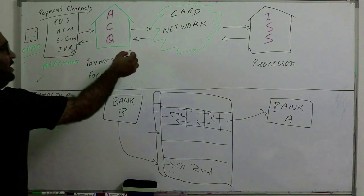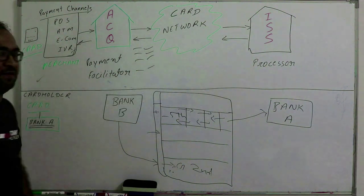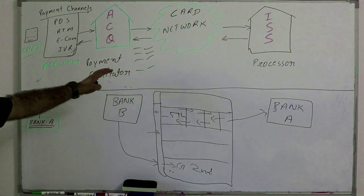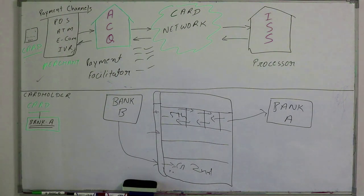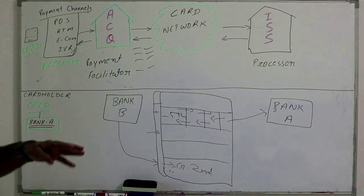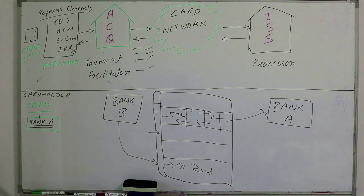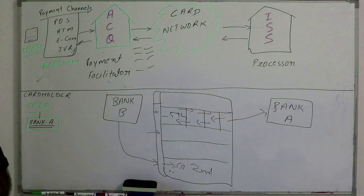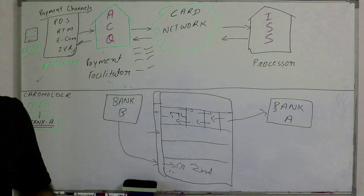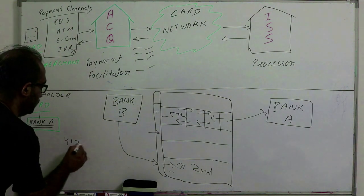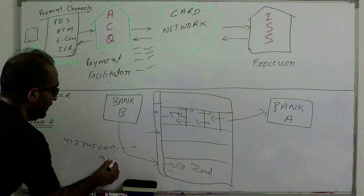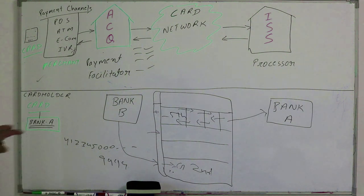Bank B will first verify the merchant details and terminal details - whether this merchant supports this transaction or not. They will do a list of checks one by one. Once all merchant-related checks are done at the acquiring system, they're going to check the BIN number. You have a 16-digit card number printed on your plastic - the first six or eight digits are the BIN. There was a mandate recently where the card scheme network started supporting an extended BIN range from six to eight digits, as introduced by ISO. So based on your card number, a BIN range for example might be 412345000 to 999999, so it's a BIN range.